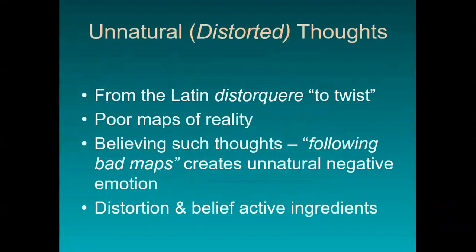Unnatural thoughts we could also call distorted thoughts. The word distorted comes to us from the Latin, and it means to twist. So a distorted thought is a thought with a twist. As such, it's a poor map of reality, and believing such thoughts — just as following a bad roadmap — is going to create unnatural negative emotion, like anxiety or depression. So distortion is an active ingredient in an unnatural thought, and so too is belief. We might have a wildly distorted thought, but if we don't believe it, it probably won't create emotional turmoil for us.